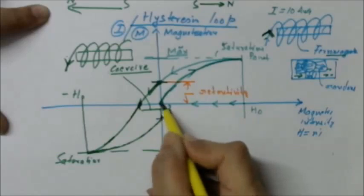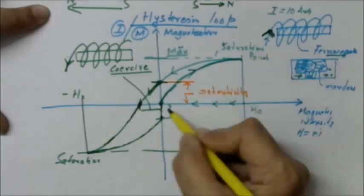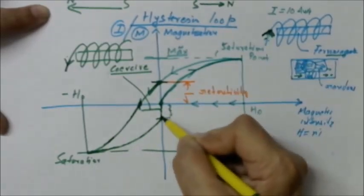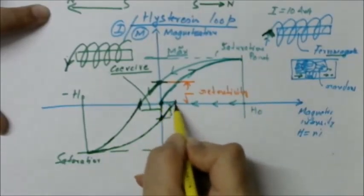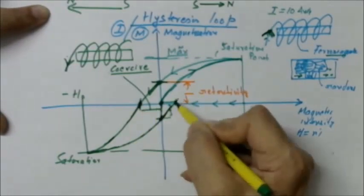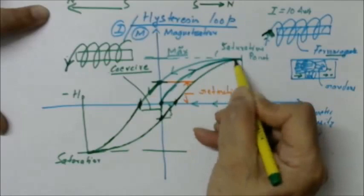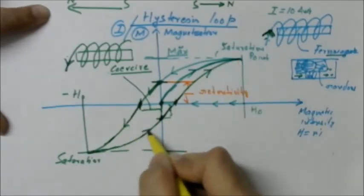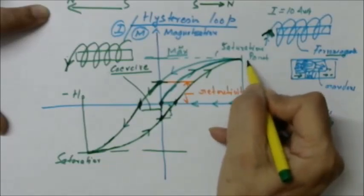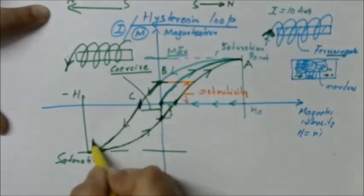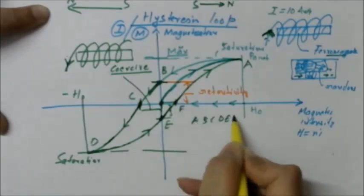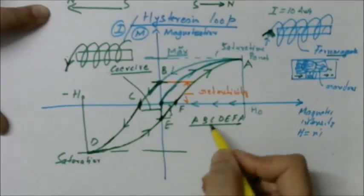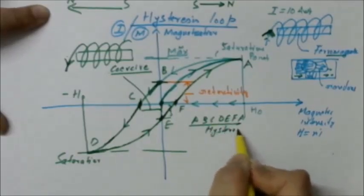Now we go back to the original positive direction of current. The material was retaining magnetization in the opposite direction, but as we flow current in the original direction it starts getting demagnetized. This is again the coercive force applied. If we keep increasing the current in this direction further, it meets the starting point. This path — labeled a, b, c, d, e, f and back to a — represents the hysteresis loop.